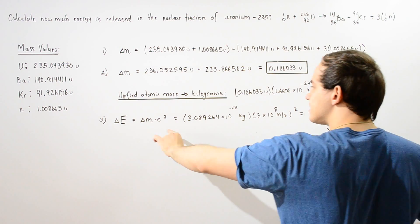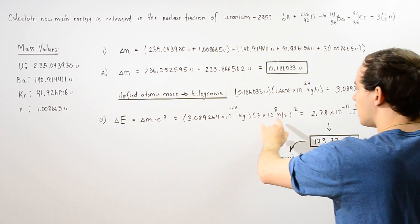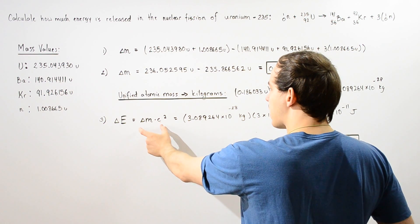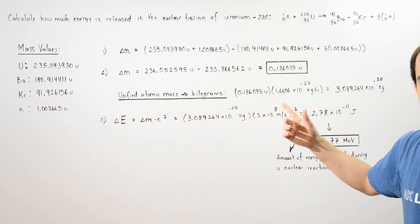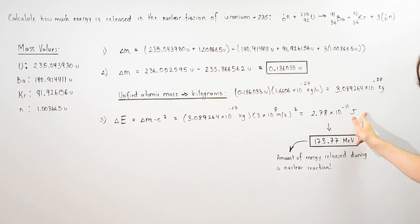And then we take the mass in kilograms and multiply it by the square of the speed of light in a vacuum as per this equation, we get 2.78 times 10 to negative 11 joules.